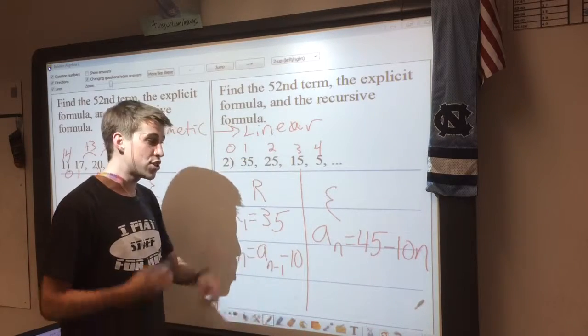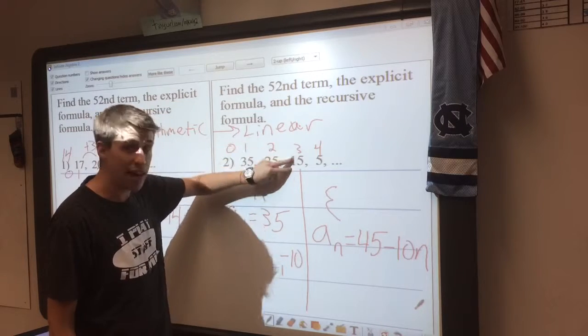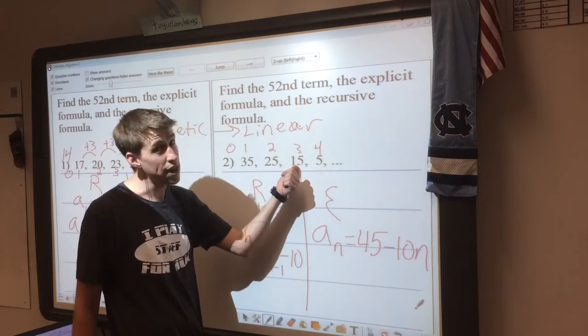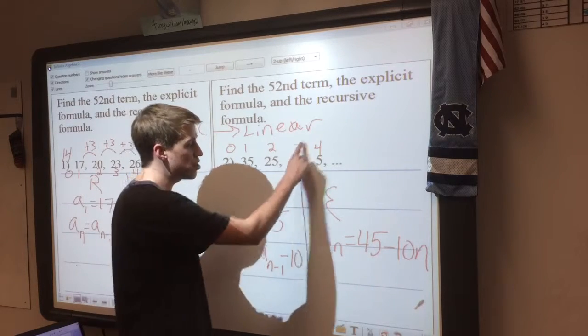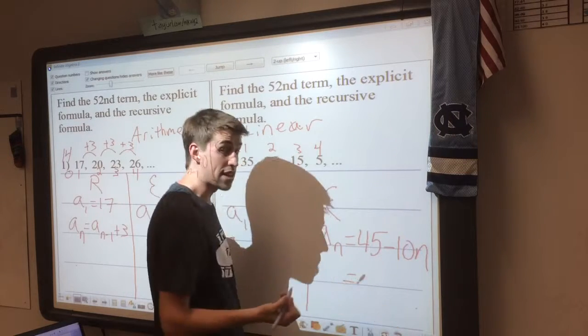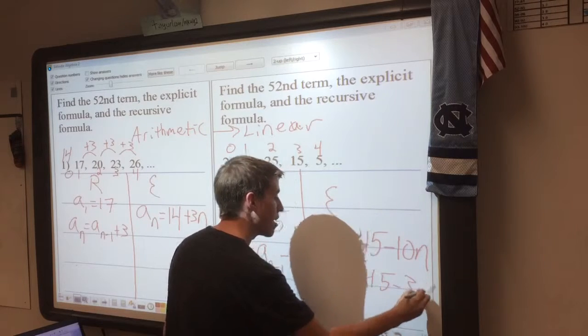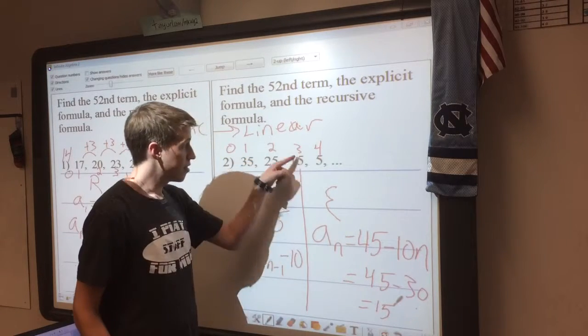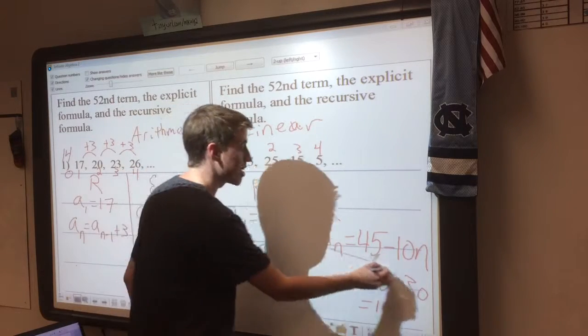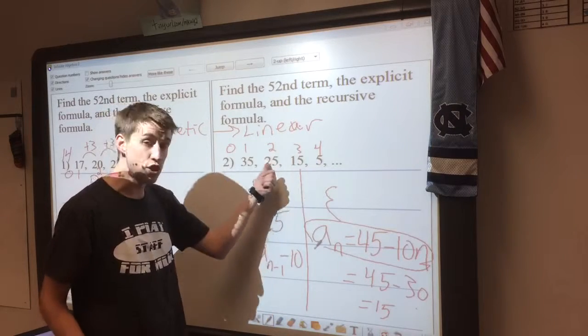Now a helpful mental trick is to check to see if your formula works. The third term is 15, we see that. So when I plug 3 down here, I should get 15 as my answer. So if I do that, plug the 3 in, negative 10 times 3 is negative 30, 45 minus 30 is 15, which we see is true. So you know you wrote a good explicit formula if you can test it and it gives you what you know is true.